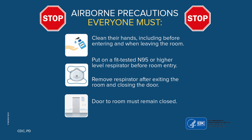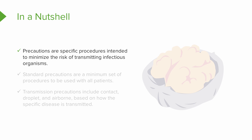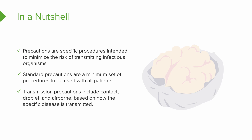All right, so there are our three: contact, droplet, and airborne. Take a minute and make sure you're very clear on the similarities and differences between these three types of transmission precautions. Now let's wrap up this video series. Precautions are specific procedures intended to minimize the risk of transmitting infectious organisms. Standard precautions are a minimum set of procedures to be used with all patients — you may hear them referred to as standard precautions or universal precautions. Transmission precautions include contact, droplet, and airborne, named that way because they're based on how the specific disease is transmitted.